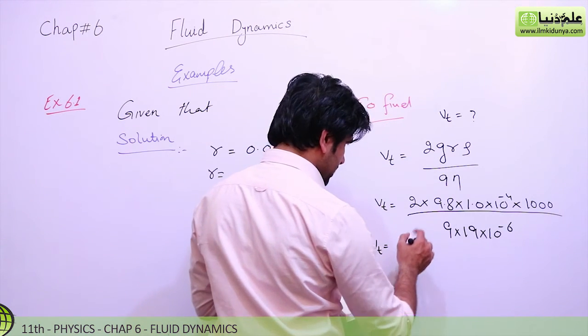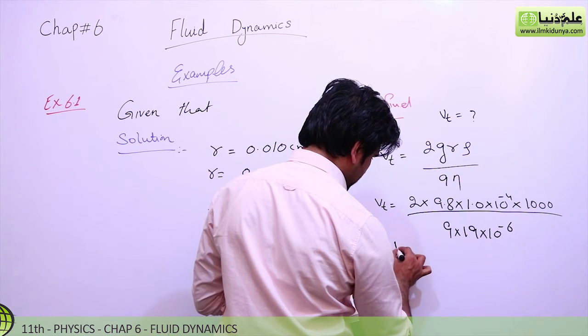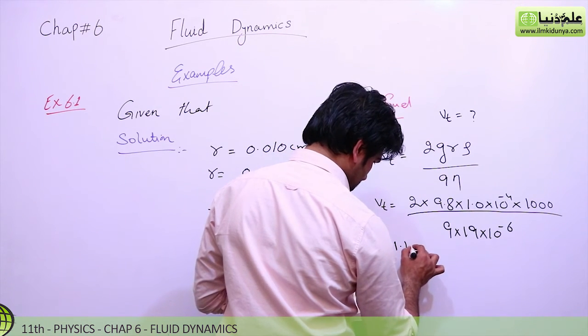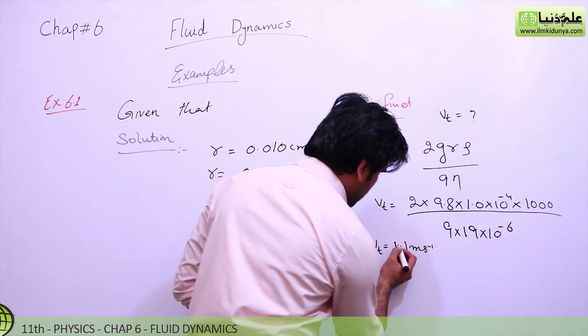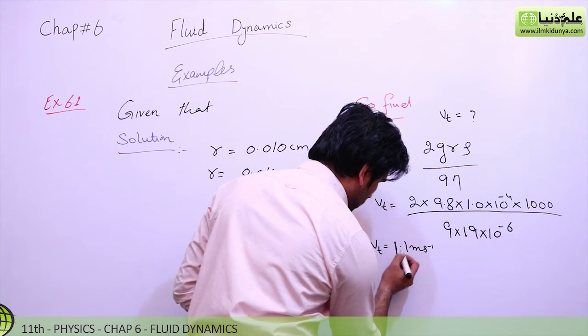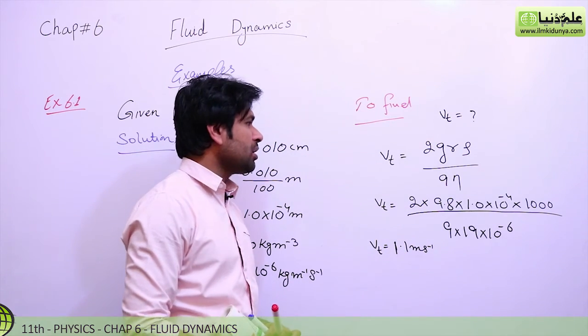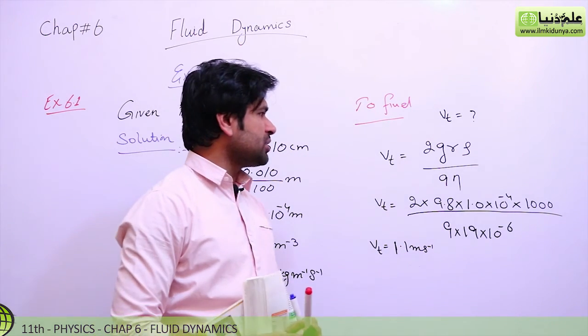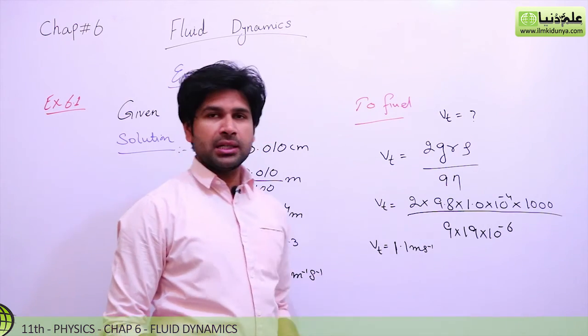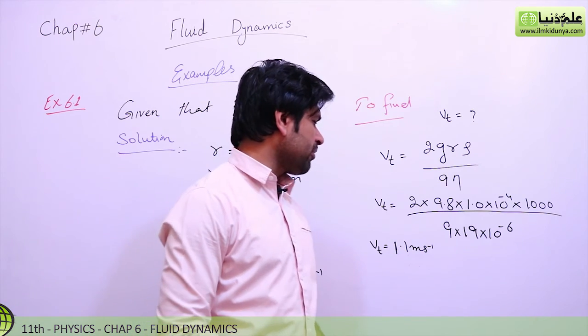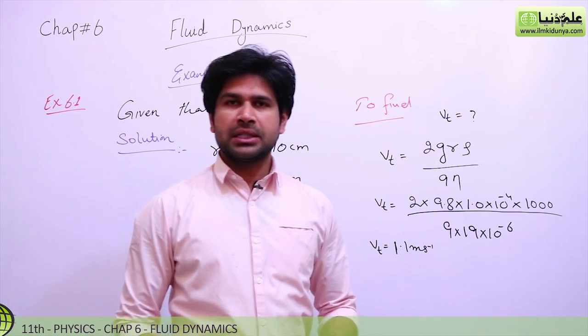When we calculate this term, we can have terminal velocity 1.1 meter per second. So dear students, when we solve this numerical problem by substituting the values of the variables g, r, rho and eta, and by calculating these fractions, we can have 1.1 meter per second. So this is the terminal velocity of the droplet.